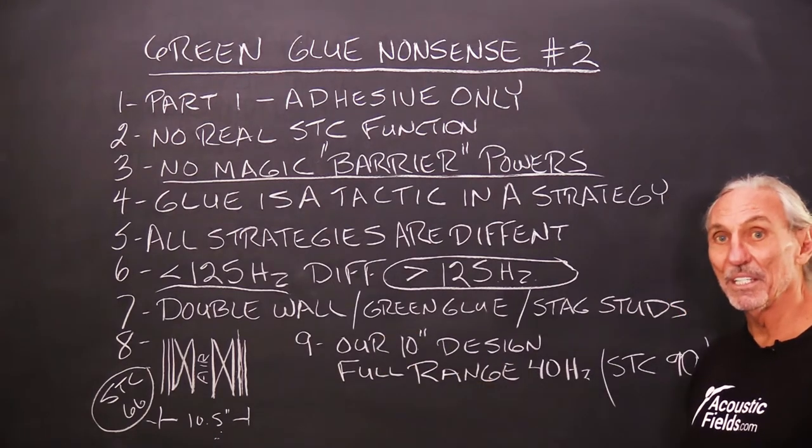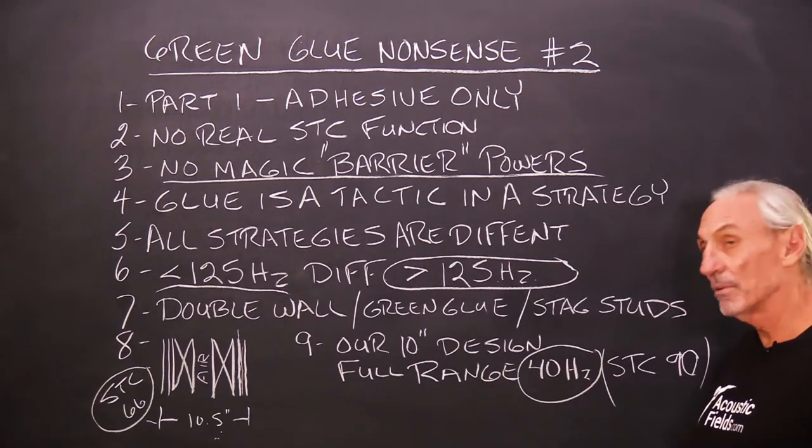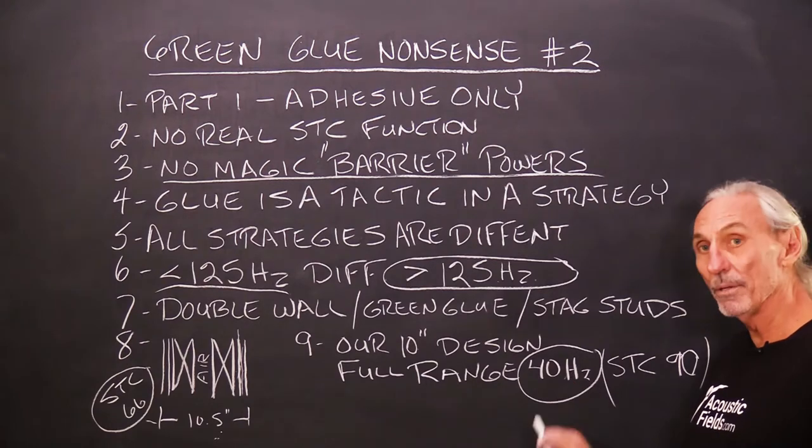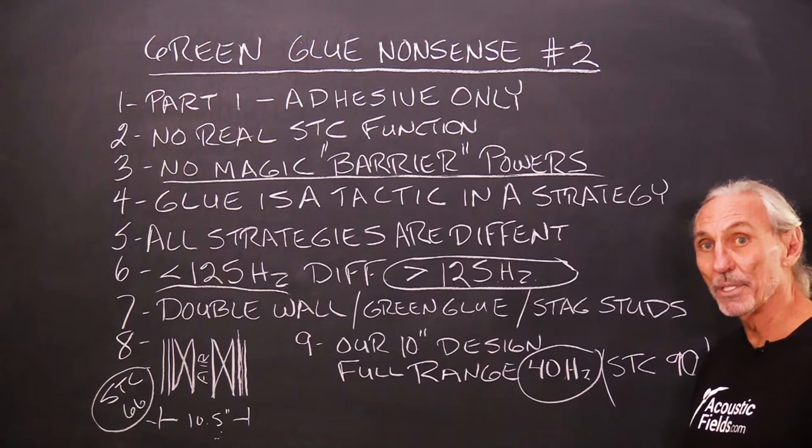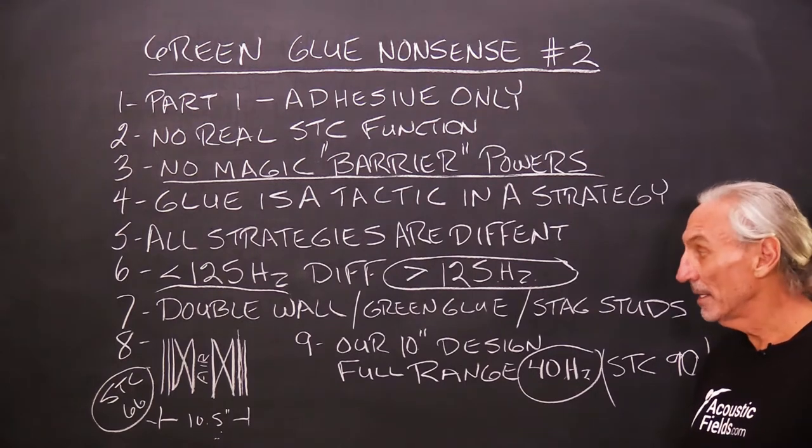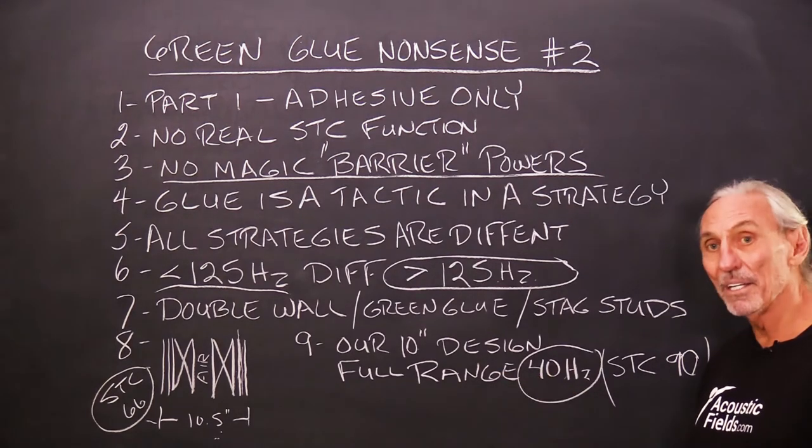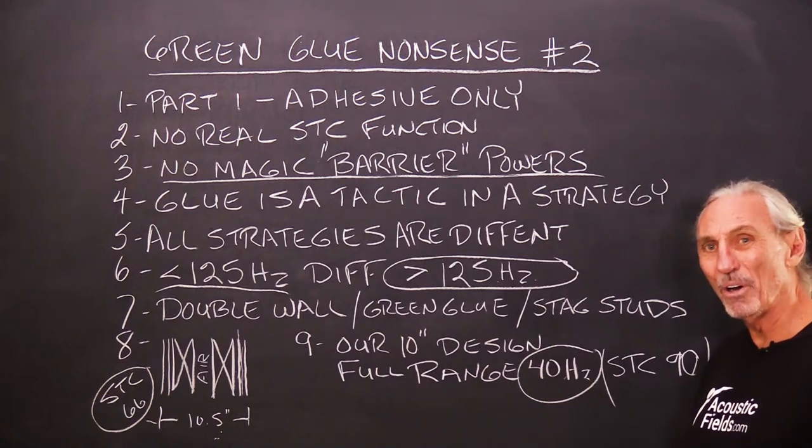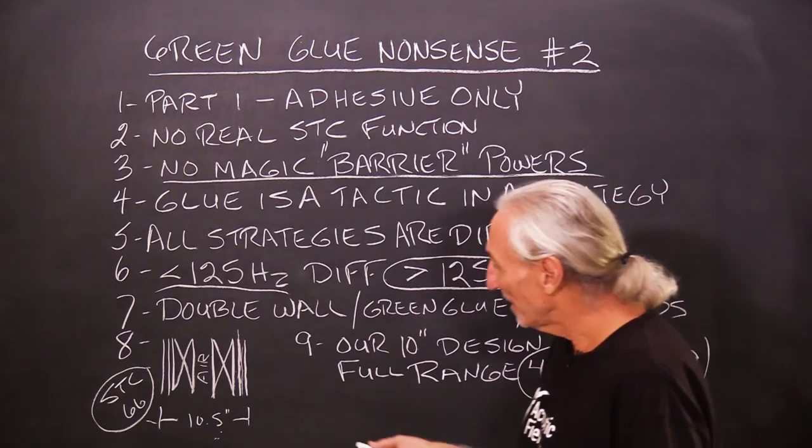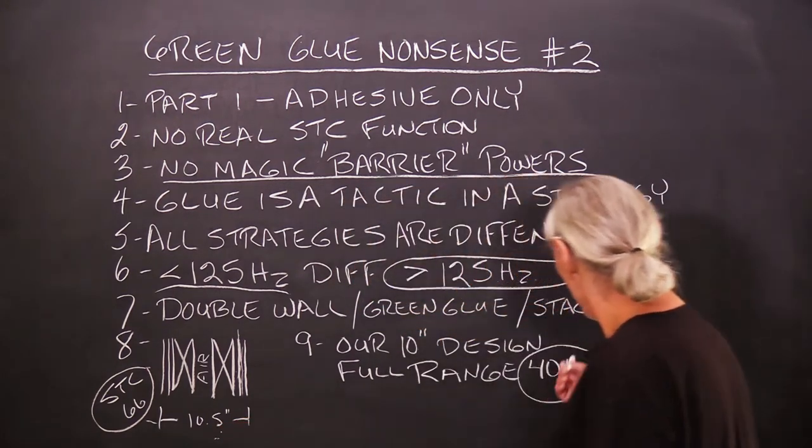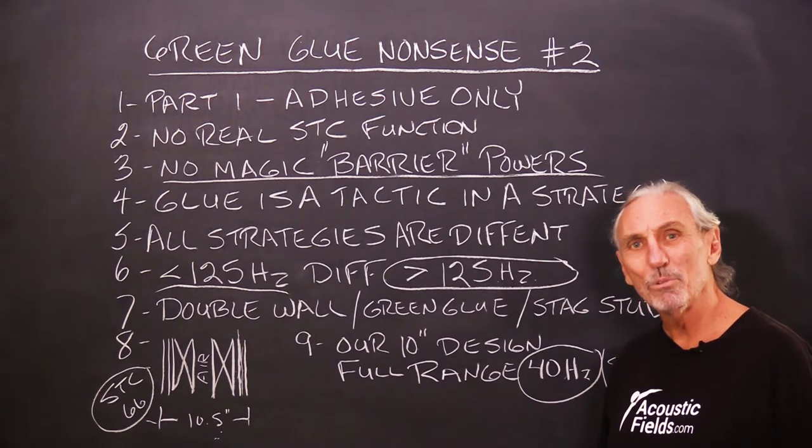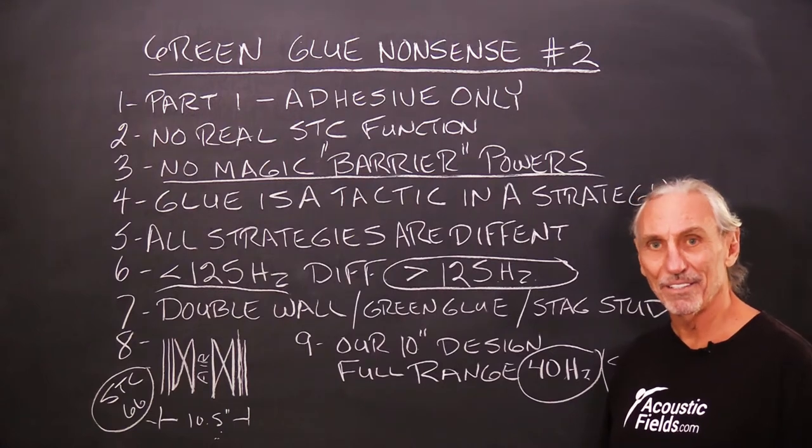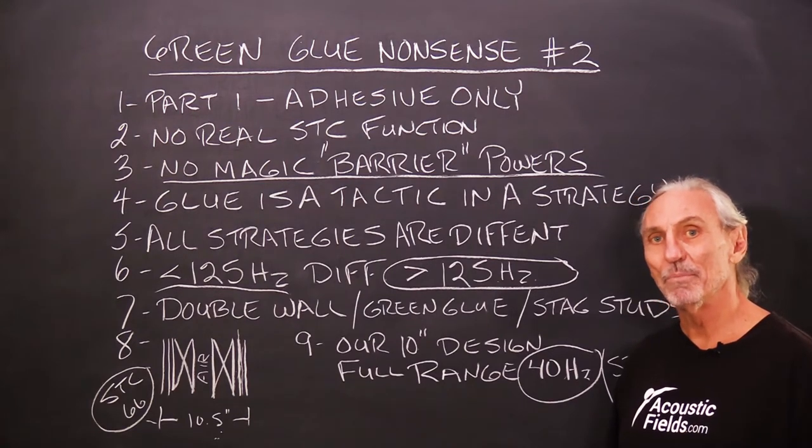There's your 66. And ours will start at 40 hertz and go up. I'm working on one to go down to 30 cycles. But I don't think I'm going to be able to do it in ten and a half. We're going to need some more space. But this just gives you an idea of the madness of all this. To give up ten and a half inches of space to get something that works above 125 cycles? Ludicrous. Nonsense. Waste of time, waste of money.